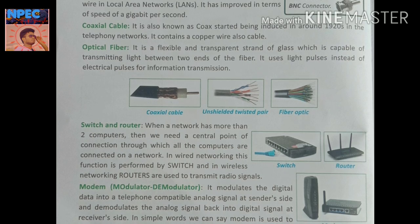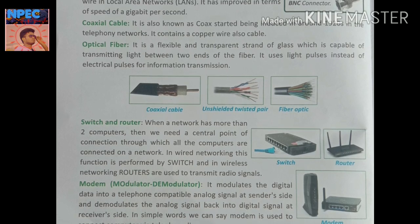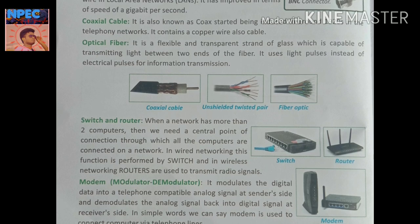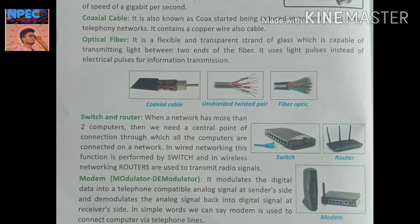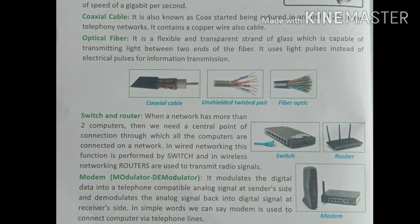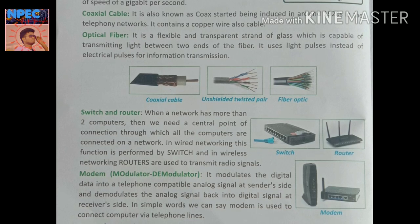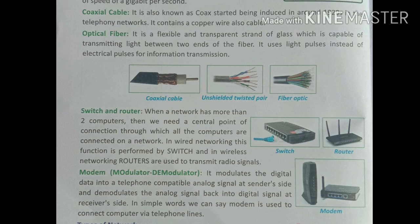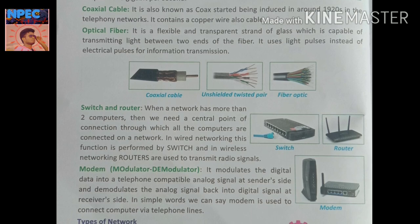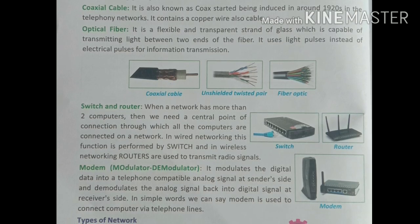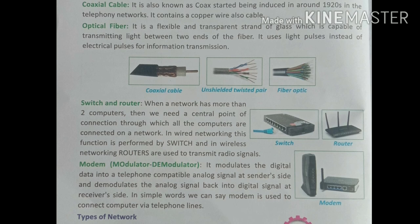Coaxial wire कुछ जगह लगाया जाता है, और कुछ जगह twisted pair लगाया जाता है जो underground किया जाता है। Next are switch and router। When a network has more than two computers, we need a central point of connection through which all computers are connected. जब दो या दो से अधिक computers एक साथ connected हों तो एक central point की जरूरत पड़ती है। Wired network में switch यह काम करता है, और wireless network में router यह काम करता है।